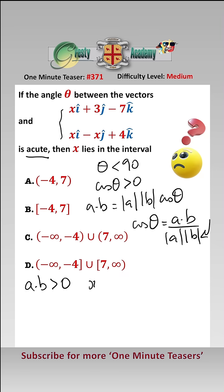Taking the dot product, we have x times x, add 3 times minus x, add minus 7 times 4, has got to be greater than 0, i.e. x squared minus 3x minus 28 must be greater than 0.